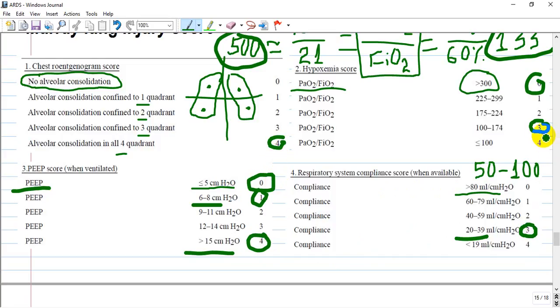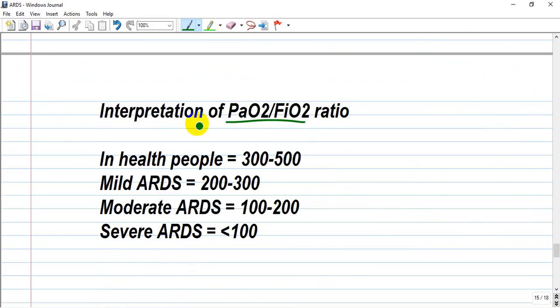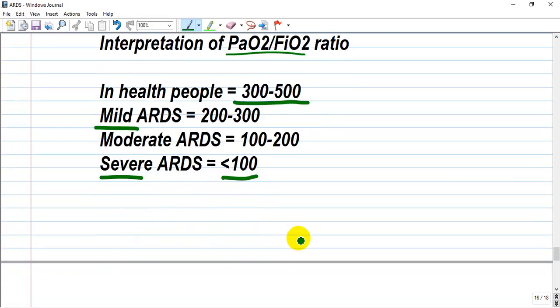So like 4, 4, 3, and 3, it will be high points. Interpretation of partial oxygen arterial pressure and fraction of oxygen ratio: in healthy people it will be 300 to 500. Mild ARDS is 200 to 300, and severe ARDS is less than 100.